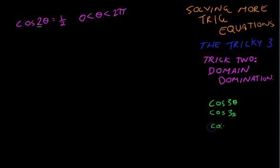Other ones could be cos seven theta or cos seven x. You could also end up with something like cos theta on two, which of course is the same as cos half theta. All of these questions come under the genre of our domain domination style questions.